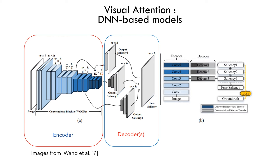Things changed a lot with the arrival of deep learning. Here is a classical architecture for visual attention: you have an encoder, which can be for example a VGG or another architecture, and then a decoder on the other side — a deconvolution at different levels. At the end, you get the saliency map, which is compared with the ground truth — real eye tracking from real people. The idea is that you learn what in an image will attract people's attention.